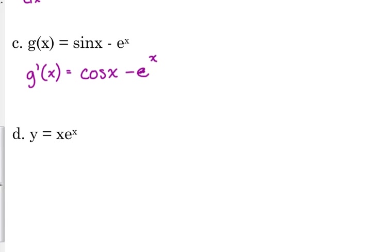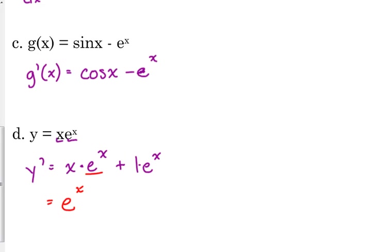For our last example, let's do a product rule problem. Our function is y equals x times e to the x. x is the first term, e to the x is the second. So y prime is the first times the derivative of the second — the derivative of e to the x is e to the x — plus the derivative of the first, which is 1, times the second. Those two terms both have e to the x in common, so we factor it out, leaving us with e to the x times (x plus 1).